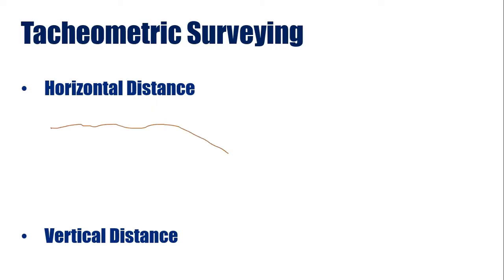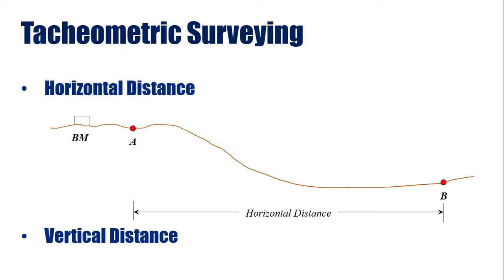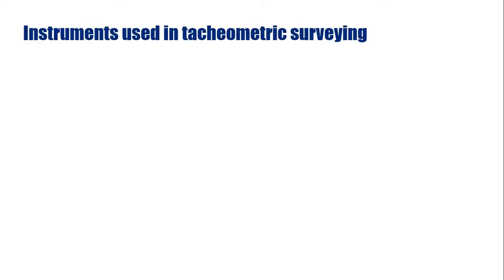For example, this is a cross-section of a land and it is required to determine the horizontal distance between point A and point B. The benchmark is also given with a known reduced level, and it is also required to determine the vertical distance for point B from the benchmark. So tachymetric surveying will help us in determining both the horizontal and vertical distances.